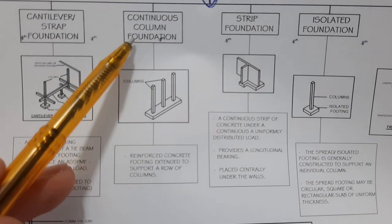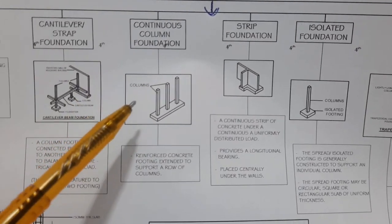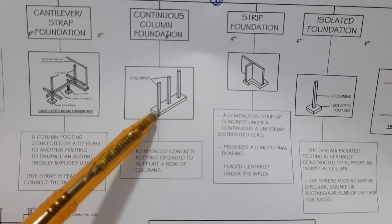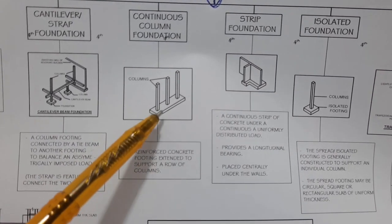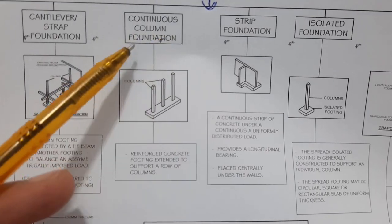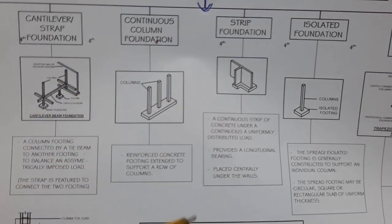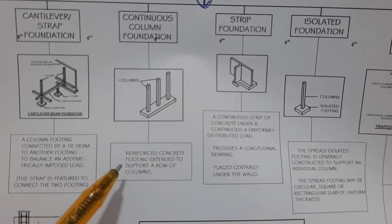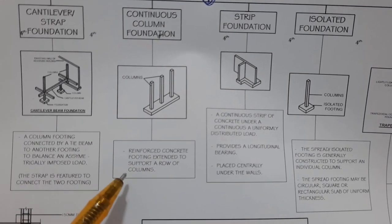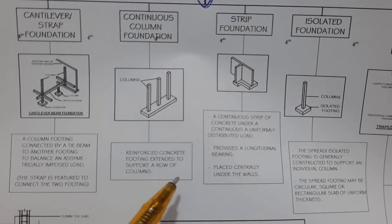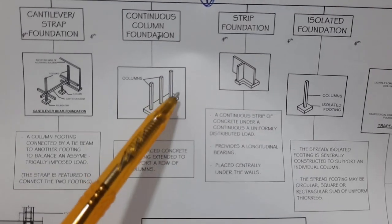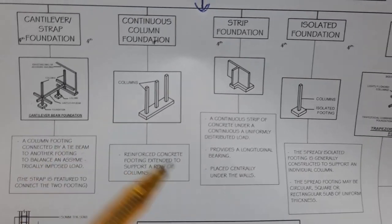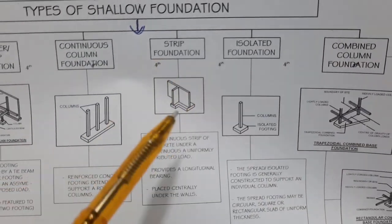The next type is continuous column foundation. If we have more than two columns, that is a continuous column footing; if we have two, that is a combined footing. In continuous column foundation, a reinforced concrete footing is extended to support a row of columns, as you can see — all columns on a continuous row.